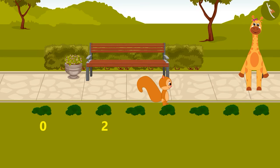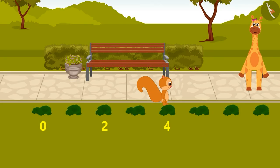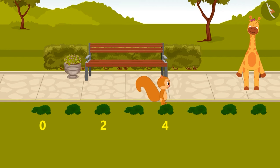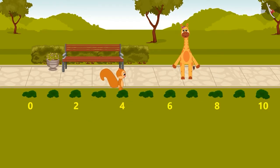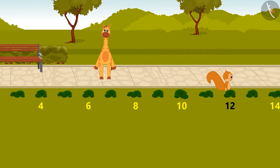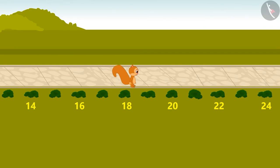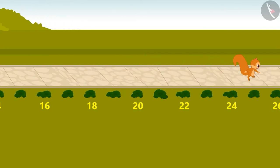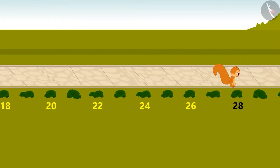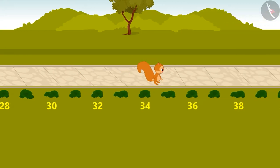Now, where did you reach? 4. That's right. Come, let's jump like this till number 10. 6, 8 and 10. Sunny kept jumping like this and finally reached bush number 36.